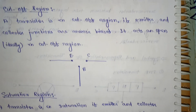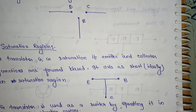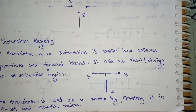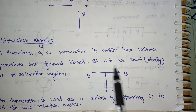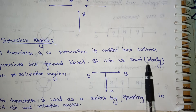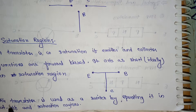Next, the saturation region. A transistor is in saturation if both the emitter and collector junctions are forward biased. It acts as a short circuit in the saturation region. The transistor is used as a switch by operating it in the cutoff and the saturation region.